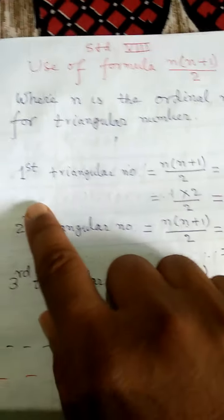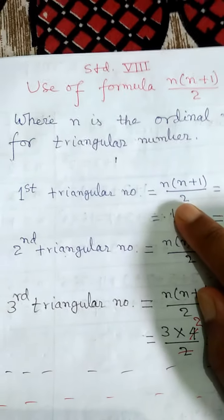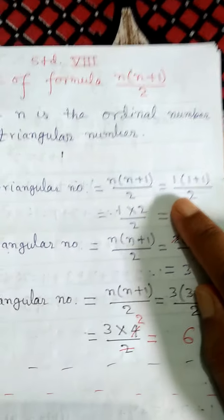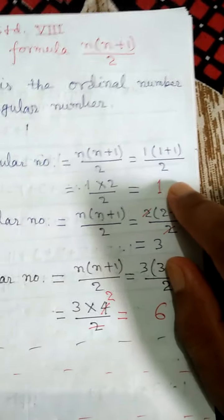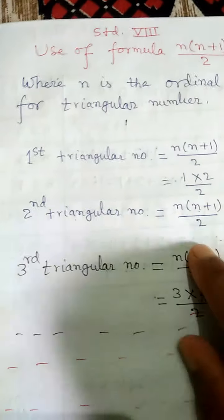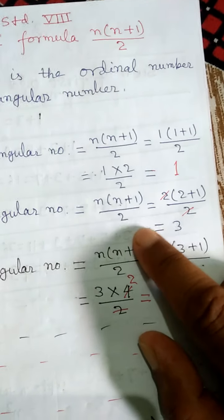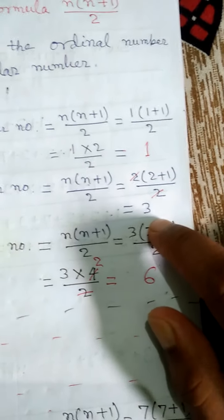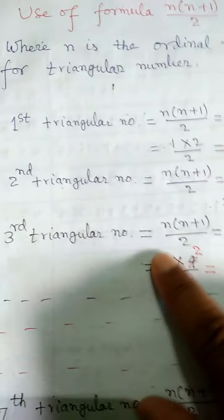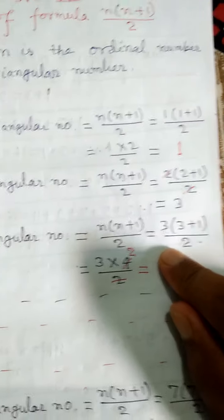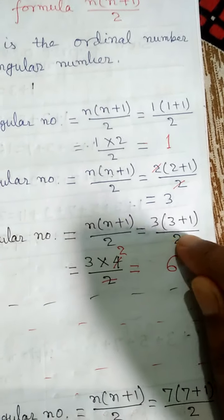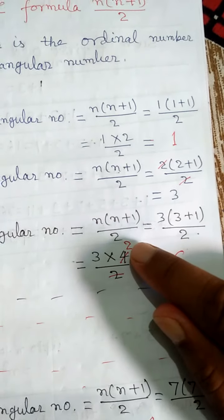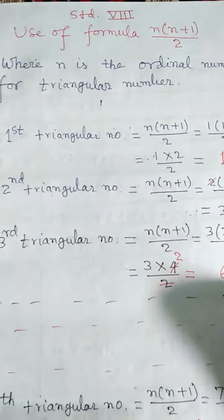When we put 1, then the first triangular number is equal to n(n+1)/2, which equals 1 into 1 plus 1 by 2. Finally, we get 1. When we put 2 in place of n, the second triangular number equals 2 into 2 plus 1 by 2, and finally we get 3. The third triangular number equals 3 into 3 plus 1 by 2, with n replaced by 3, and finally we get 6.